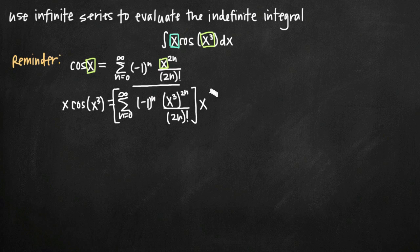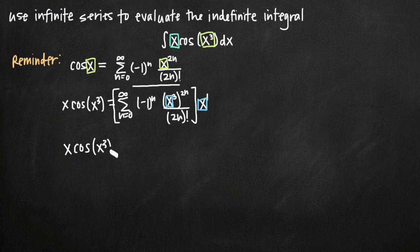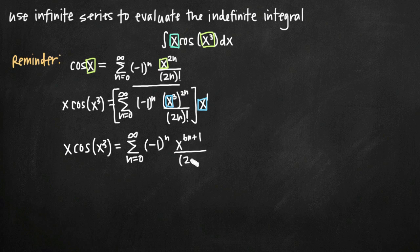Since x and the series term are multiplied together, we have x to the first power times x to the third raised to the 2n, which is x to the sixth n. When two terms have like bases — both base x — and are multiplied together, you add their exponents. So we add the exponents to get x to the sixth n plus one. Therefore, x times cosine of x cubed equals the infinite sum from n equals zero to infinity of negative one to the n times x to the sixth n plus one, all divided by the quantity 2n factorial.